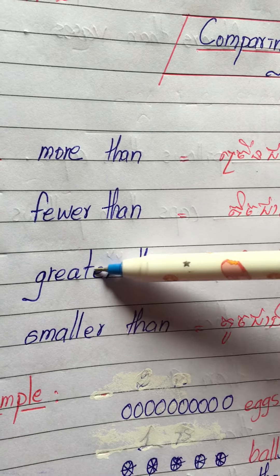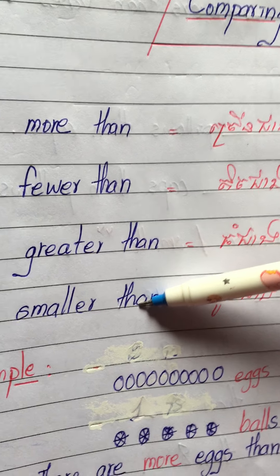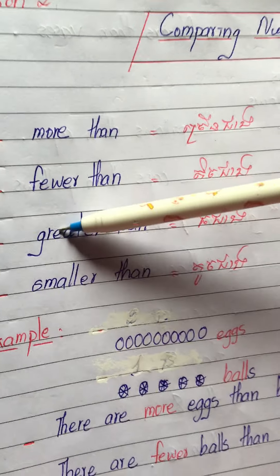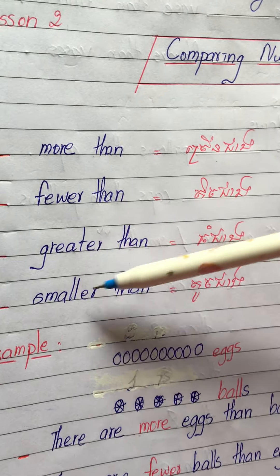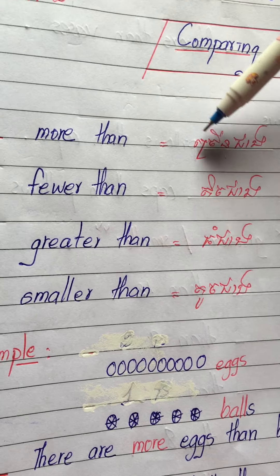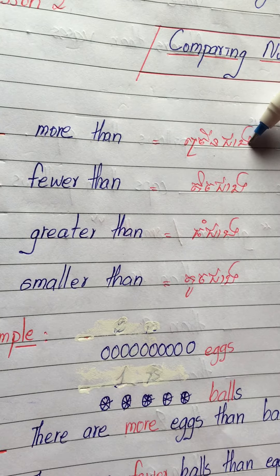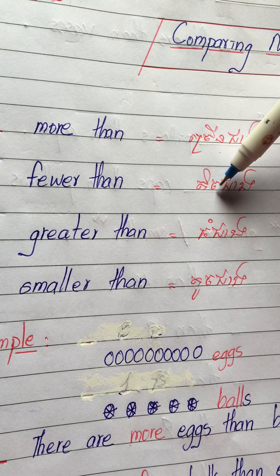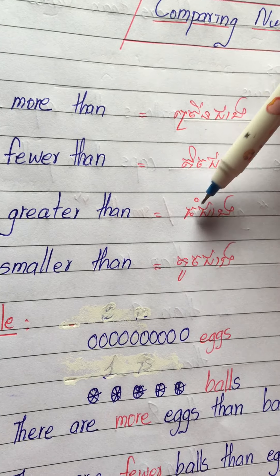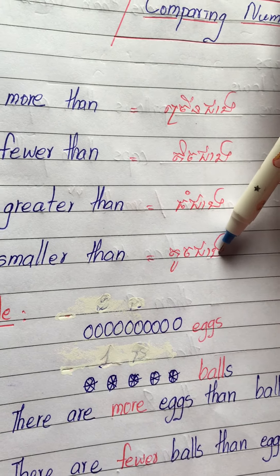Here you have to learn: more than, fewer than, greater than, and smaller than. In Khmer: more than is 'chran chiang', fewer than is 'tig chiang', greater than is 'tom chiang', smaller than is 'to chiang'.